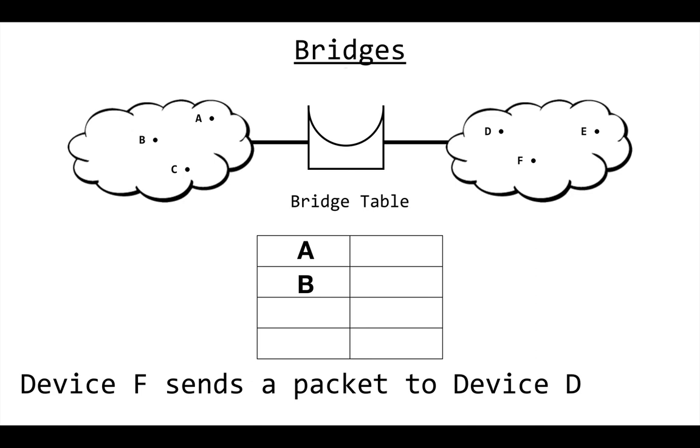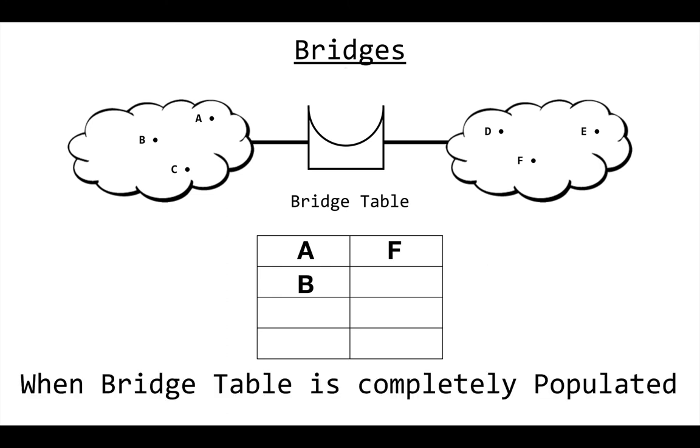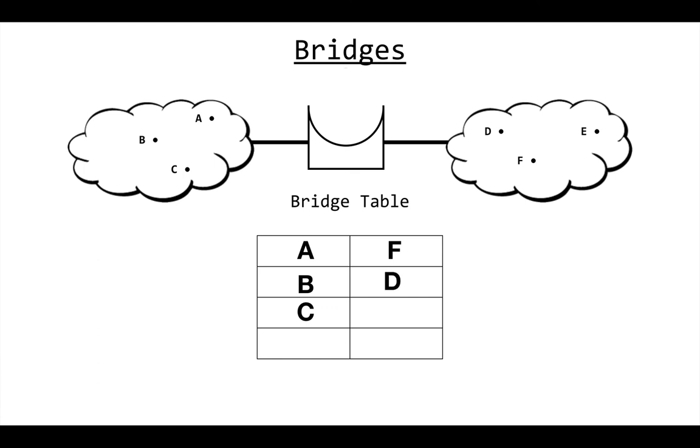Since device F sent it, now the bridge knows where F is and it's going to record that into the bridge table. Now then, as these machines communicate with each other, the bridge table will become what we call completely populated. Completely populated means it knows where all the devices are.